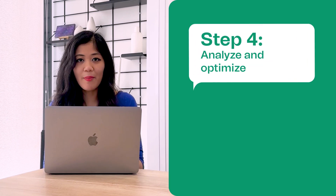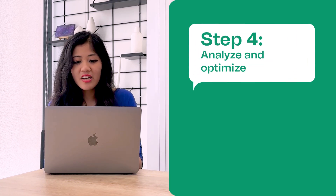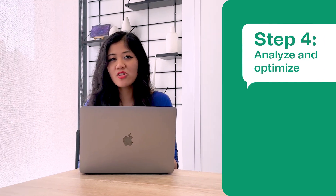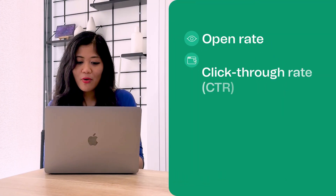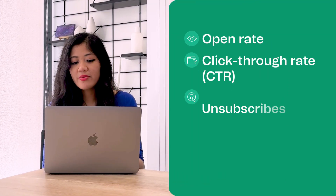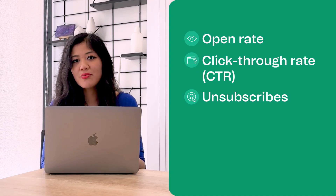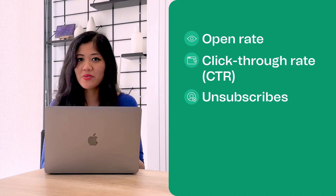Finally, it's time for step four: analyze and optimize. After your email campaign gets sent out, it can be tempting to just move on and forget about it. However, if you're just starting out, your goal should be to improve from past campaigns and optimize your future campaigns going forward. To do this, you'll want to look at the data. Most email marketing platforms offer at least basic reports, which will give you insights for things like click-through rates, open rates, and unsubscribes.